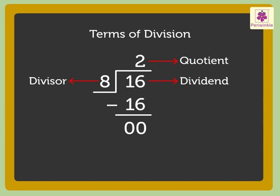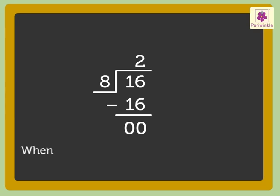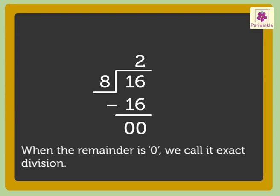The number that remains after dividing is called the remainder. Here, number 0 is the remainder. Do you know? When the remainder is 0, we call it exact division.